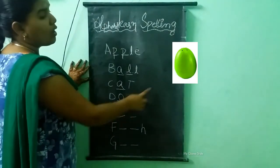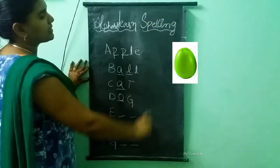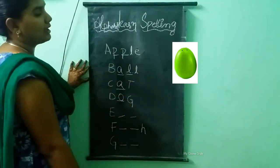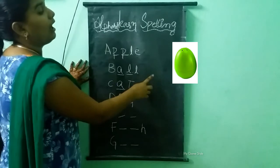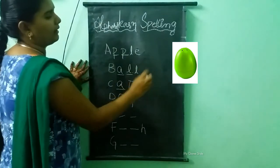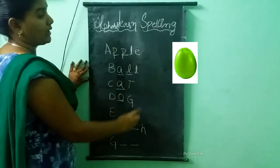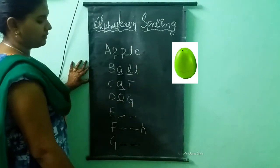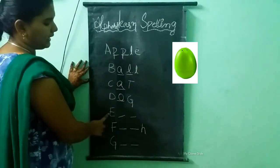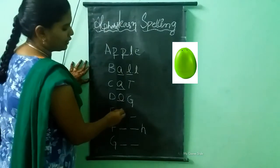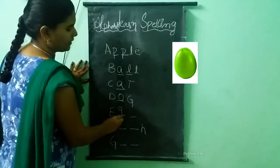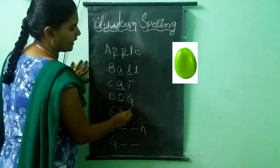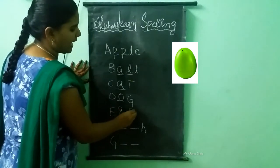What picture is this? This is an egg. What is the spelling of egg? E-G-G. Egg.